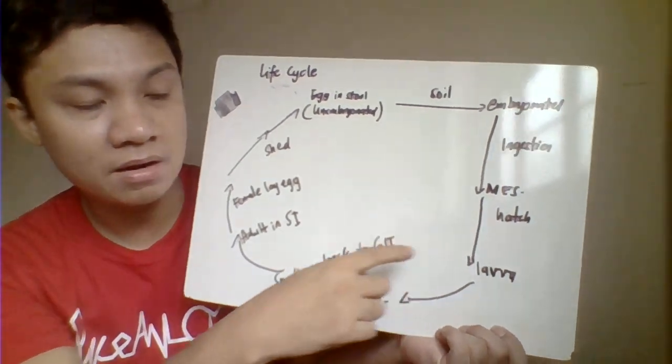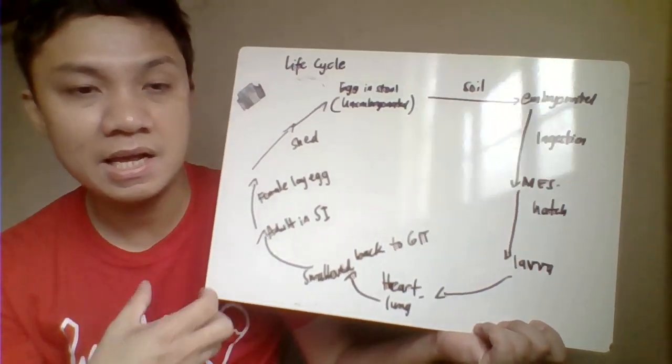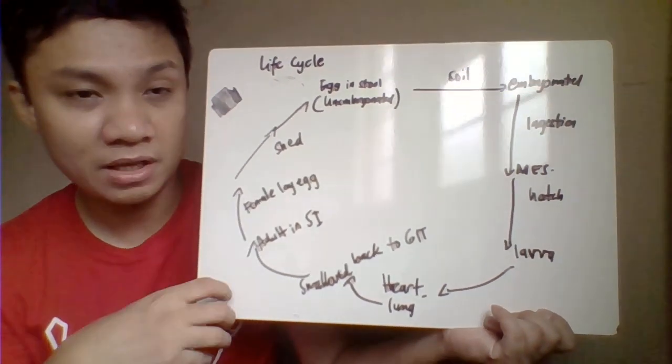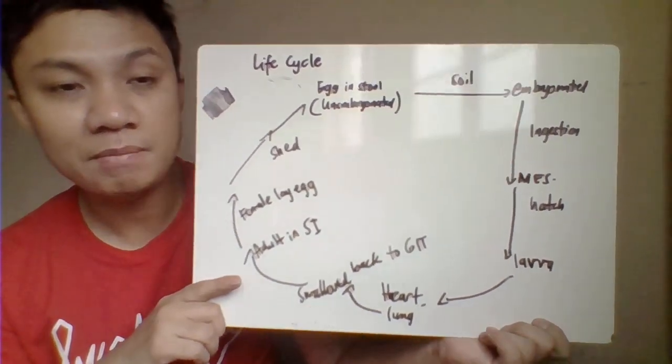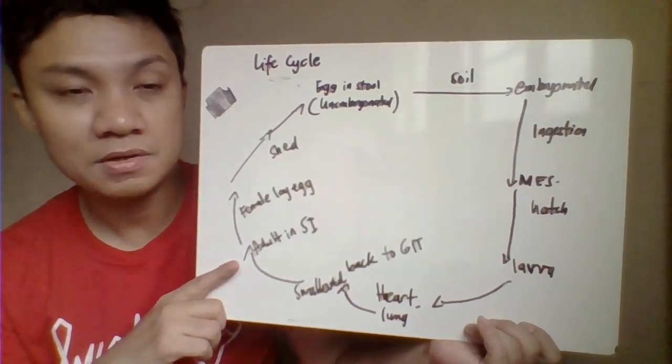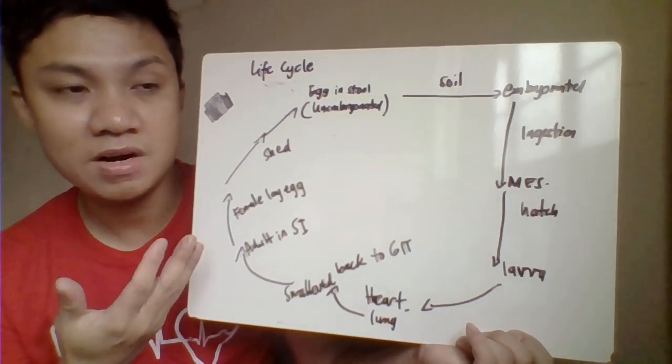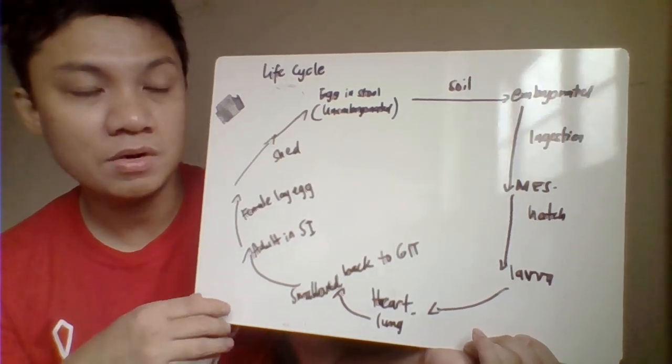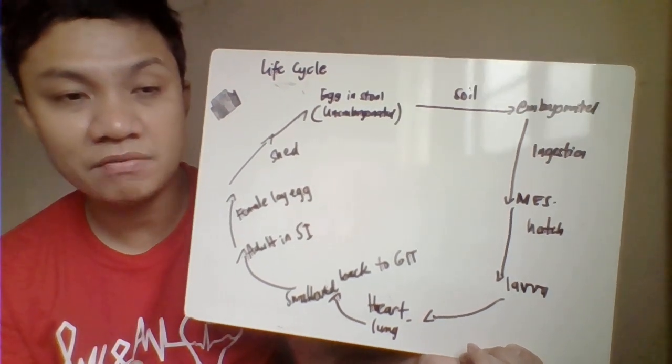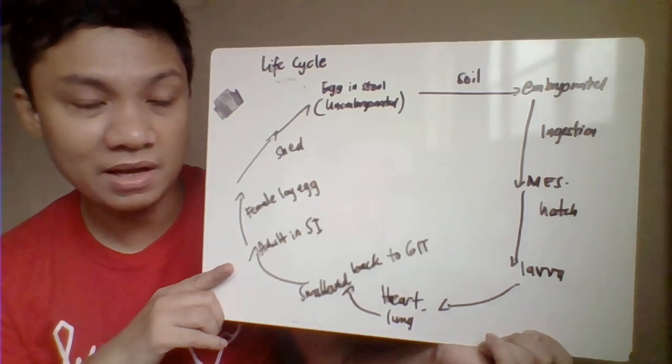Once ingested, eggs go to your mouth, esophagus, down to your stomach. The eggs hatch and liberate the larvae. The larvae migrate to different parts of your body - they can ascend to your heart and lungs. Eventually they're swallowed back, going to the small intestine. The small intestine becomes the final habitat where they develop into adult worms, both male and female. They copulate, and eventually the gravid or pregnant female adult worm lays eggs which are shed in the feces. The eggs are unembroyonated and require soil to embryonate and become infective.